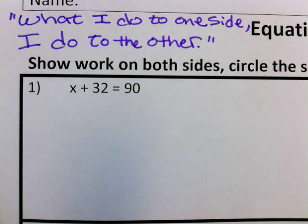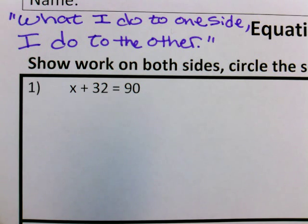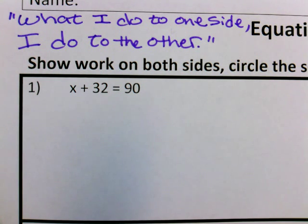In this lesson, we're going to be looking at how to solve one-step equations. Right here, we can see that we have the problem x plus 32 equals 90. We're going to be able to solve this equation in only one step.